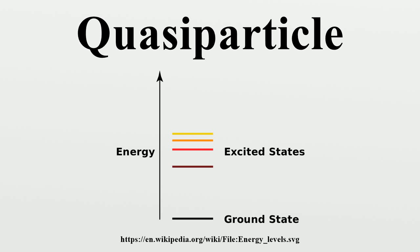Motion in a solid is extremely complicated. Each electron and proton gets pushed and pulled by all the other electrons and protons in the solid. These strong interactions make it very difficult to predict and understand the behavior of solids. On the other hand, the motion of a non-interacting particle is quite simple — in classical mechanics it would move in a straight line, and in quantum mechanics it would move in a superposition of plane waves. This is the motivation for the concept of quasi-particles: the complicated motion of actual particles in a solid can be mathematically transformed into the much simpler motion of imagined quasi-particles, which behave more like non-interacting particles.